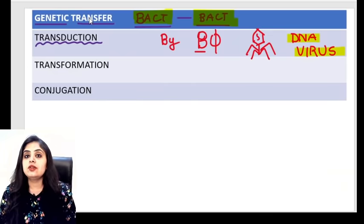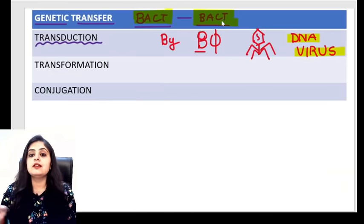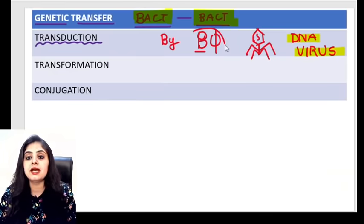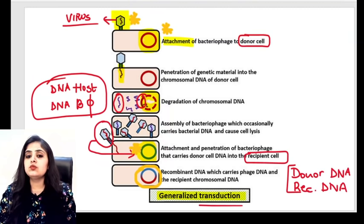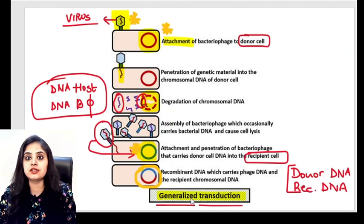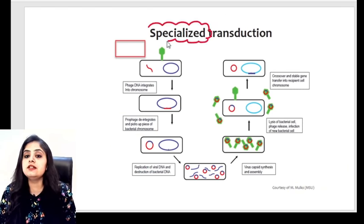So in transduction, DNA goes from one bacterium to another, and who carries that DNA? A bacteriophage — which is actually a virus. But this was just one type of transduction, called generalized transduction. There is another type which is a little special and different — specialized transduction.